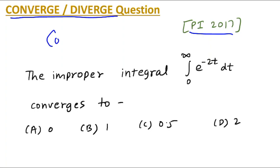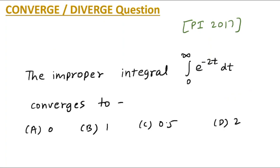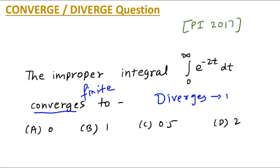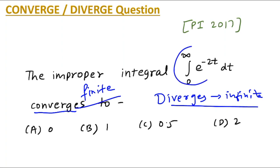These concepts are already explained in my previous videos, so make sure you are watching the previous videos and getting the knowledge first before solving these questions. Converges means the answer is finite, whereas divergence means the answer is infinite. This is the basic meaning — make a note of it. So let us solve this integration; this is a definite integral because limits are given.